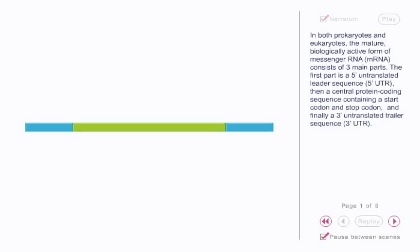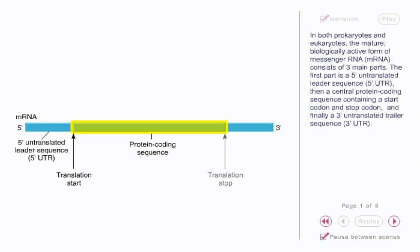In both prokaryotes and eukaryotes, the mature, biologically active form of messenger RNA consists of three main parts. The first part is a five-prime untranslated leader sequence, then a central protein coding sequence containing a start codon and stop codon, and finally, a three-prime untranslated trailer sequence.